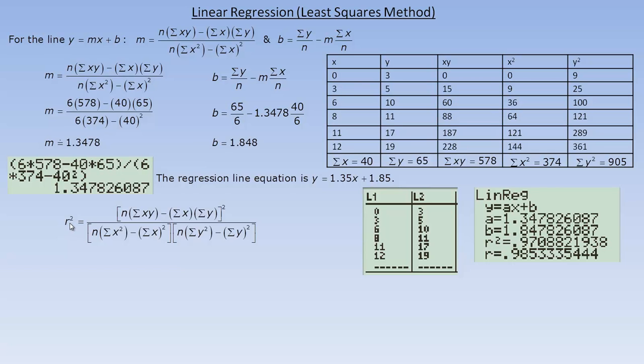If you thought this formula was big, here's an even bigger one. This is the coefficient of determination formula. Let's fill in the values. Notice that the whole numerator is squared. We have to go n times the sum of the xys. That would be 6. The sum of the xys is the same 578 we used right here. 578 multiplied by 6 minus the product of the sum of the x's and the sum of the y's. That's the first two sums from here. The sum of the x's is 40. The sum of the y's is 65. And that's all squared.